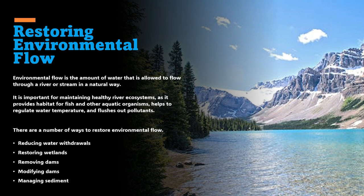Some of the benefits of restoring environmental flow include improved fish populations, as fish need a certain amount of water to migrate, spawn, and find food. Increased biodiversity occurs as a healthy river ecosystem supports a wide variety of plants and animals. Environmental flow also helps to improve water quality by flushing out pollutants, helps regulate water levels to reduce the risk of flooding, and improves opportunities for recreation such as swimming, fishing, and boating.